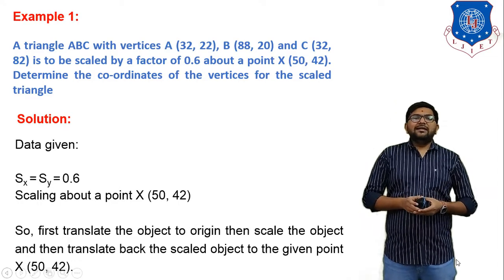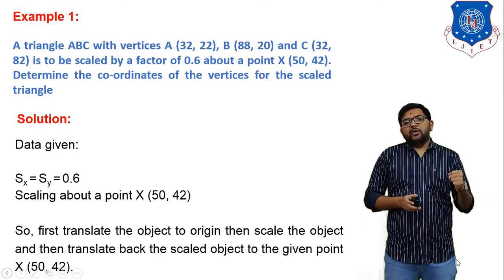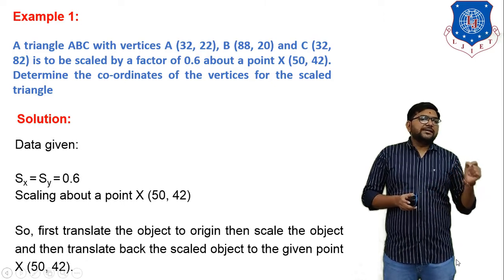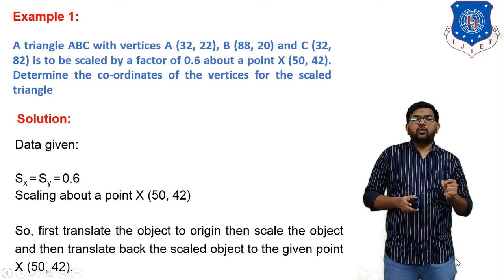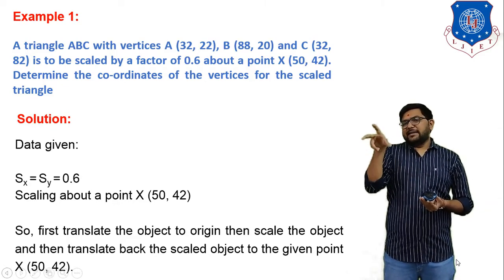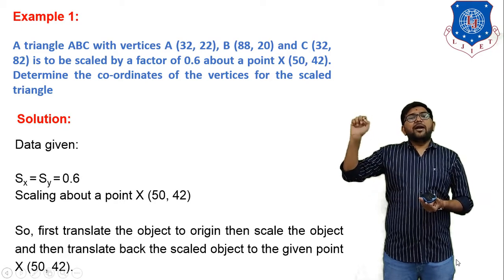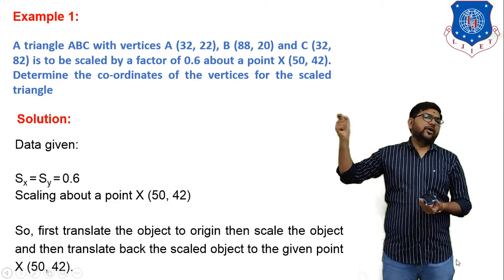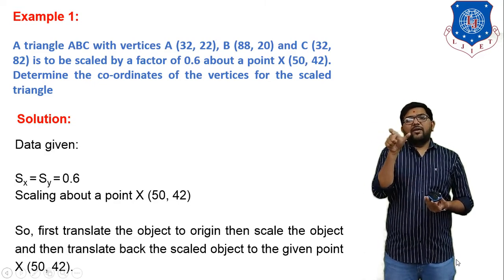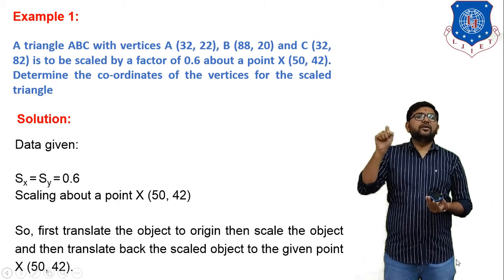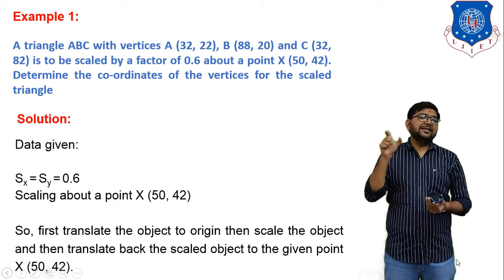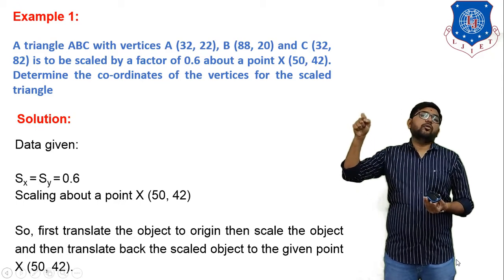Example number 1: A triangle ABC with vertices A(32, 22), B(88, 20), and C(32, 82) is to be scaled by a factor of 0.6 about point X(50, 42). Determine the coordinates of the vertices of the scaled triangle. So we have one triangle ABC to scale, with scaling factor 0.6. Since the scaling factor is less than 1, the size of the triangle will be reduced. Both SX and SY equal 0.6, and we scale about point X(50, 42).